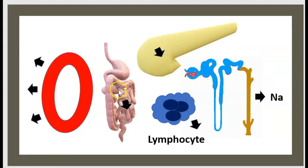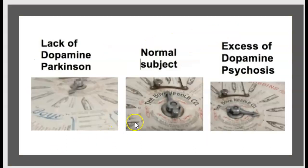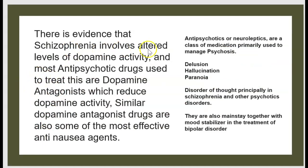To summarize peripheral effects: vasodilation in vessels, decreased motility in GI, decreased insulin in pancreas, increased secretion of sodium in kidney, and decreased activity of lymphocytes. A normal subject is in balance between lack of dopamine and excess of dopamine. If there is a lack of dopamine, it leads to Parkinson's. If there is excess of dopamine, it leads to psychosis. There is evidence that schizophrenia involves altered levels of dopamine activity, and most antipsychotic drugs used to treat this are dopamine antagonists, which reduce dopamine activity. Similar dopamine antagonist drugs are also some of the most effective anti-nausea agents.